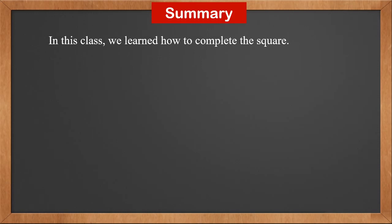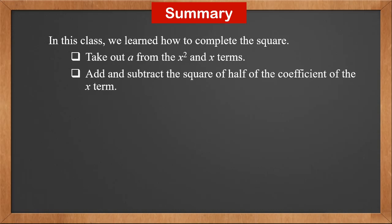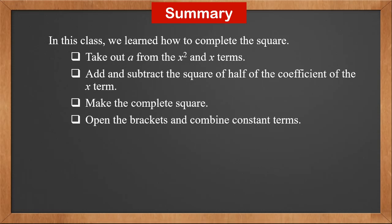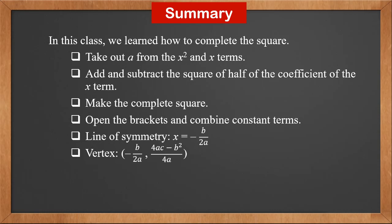In this class, we learned how to complete the square: take out a from the x² and x terms; add and subtract the square of half of the coefficient of x; make the complete square; open the brackets and combine constant terms. The line of symmetry is x = -b/(2a). The vertex is (-b/(2a), (4ac - b²)/(4a)), and the min or max value is (4ac - b²)/(4a).